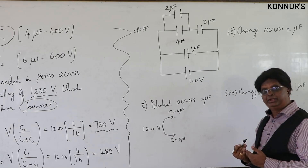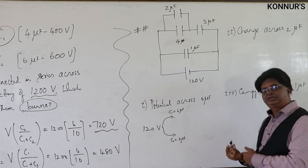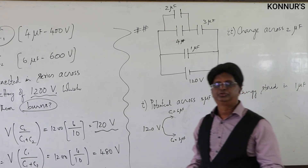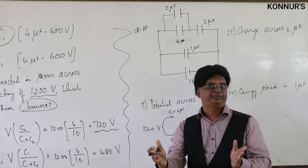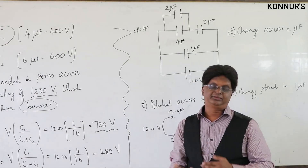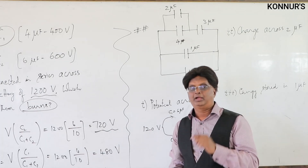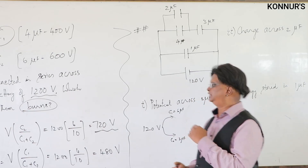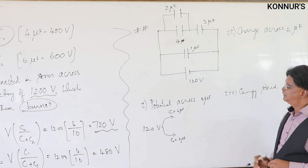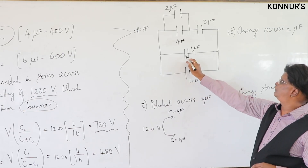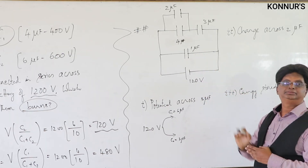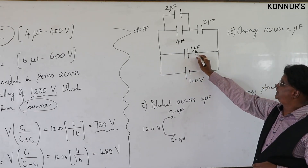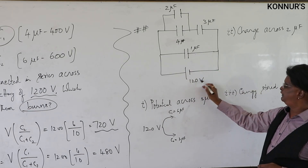Now we calculate individual potentials, charges, and energies using the principles of how potential and charge divide. The battery is 120 volts. Since the 1 microfarad is directly connected to the battery, all 120 volts appear across it.